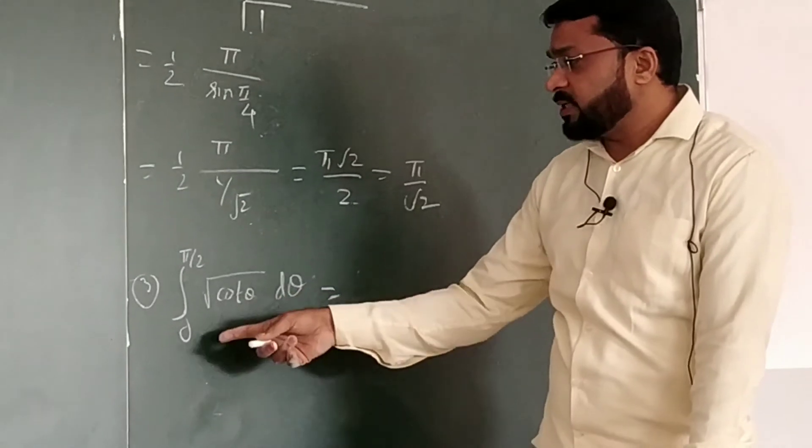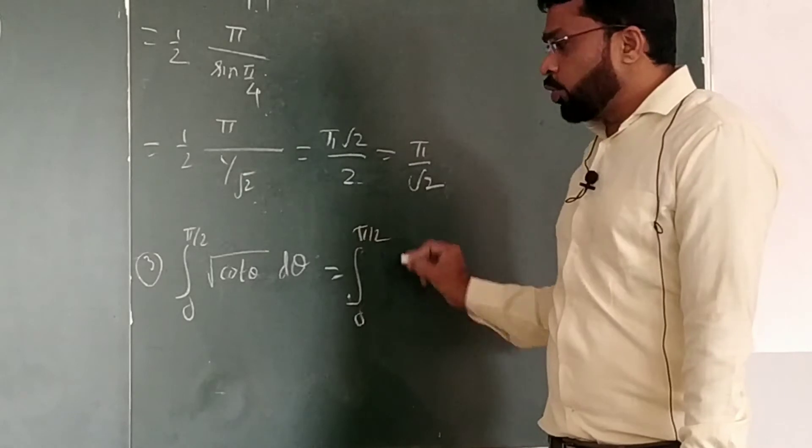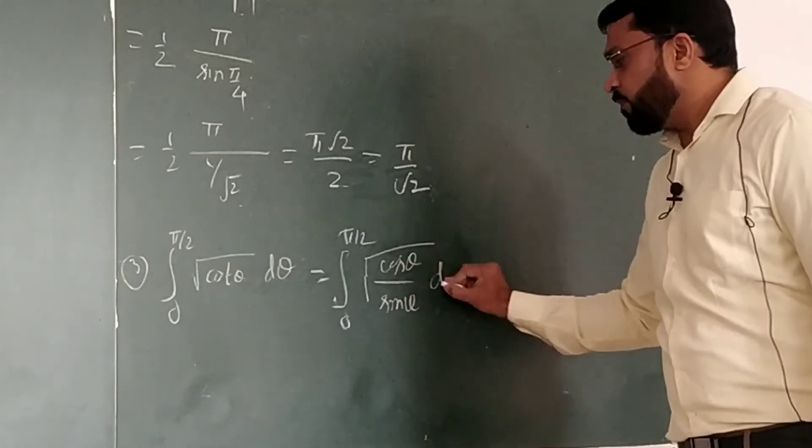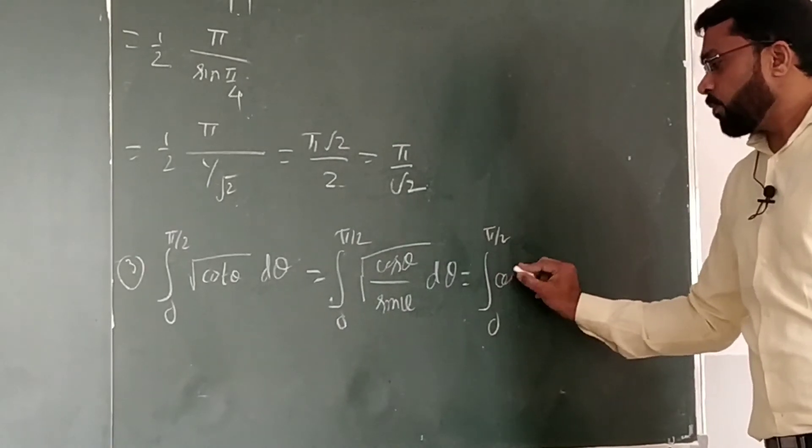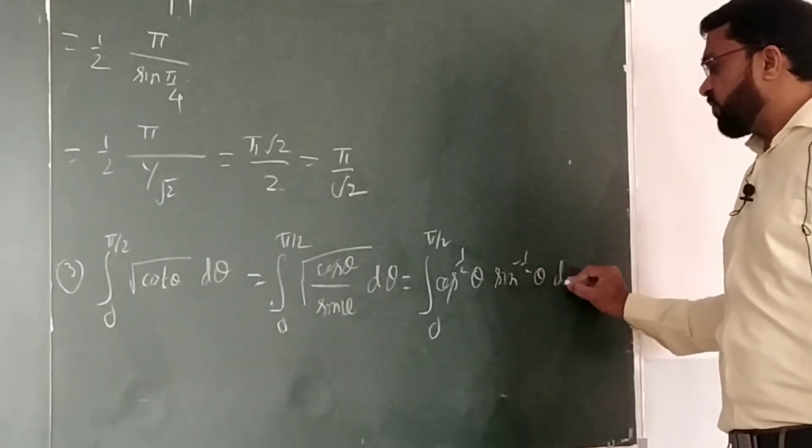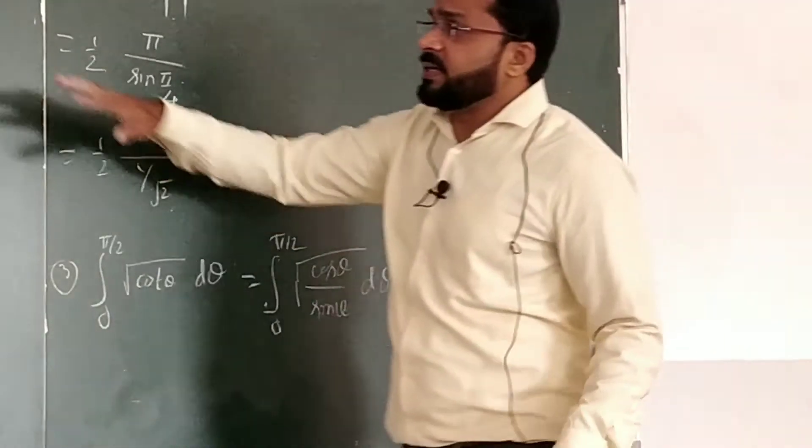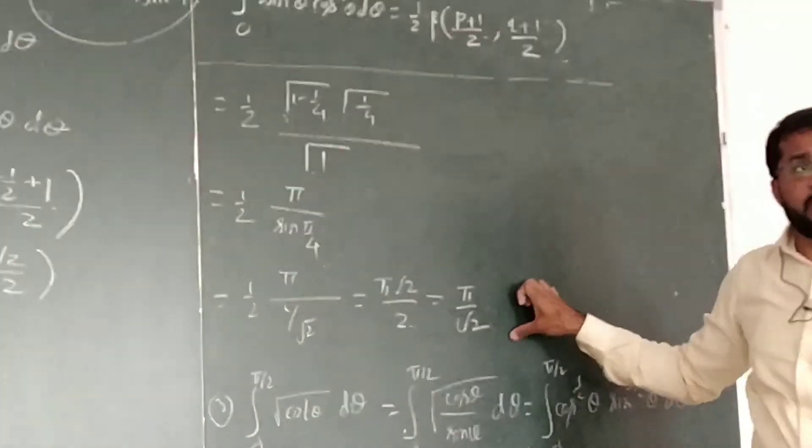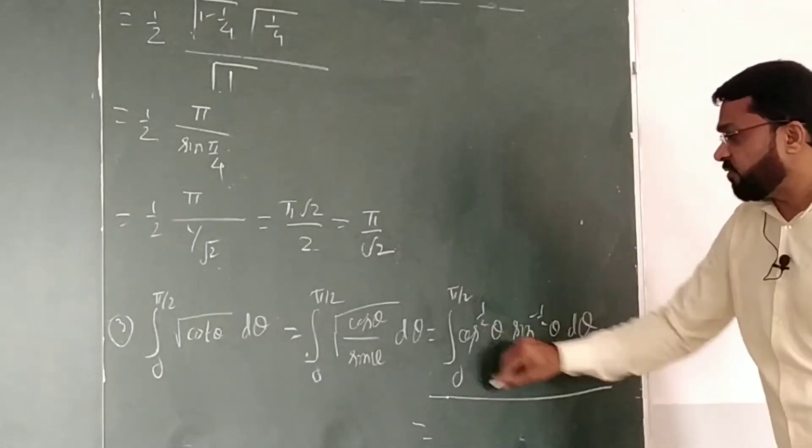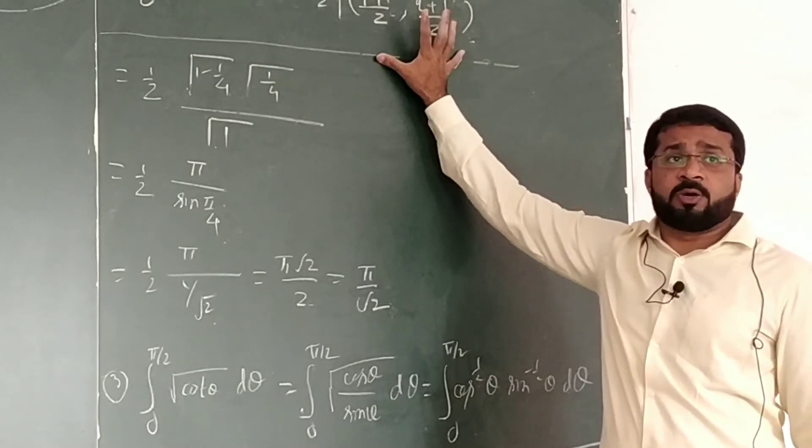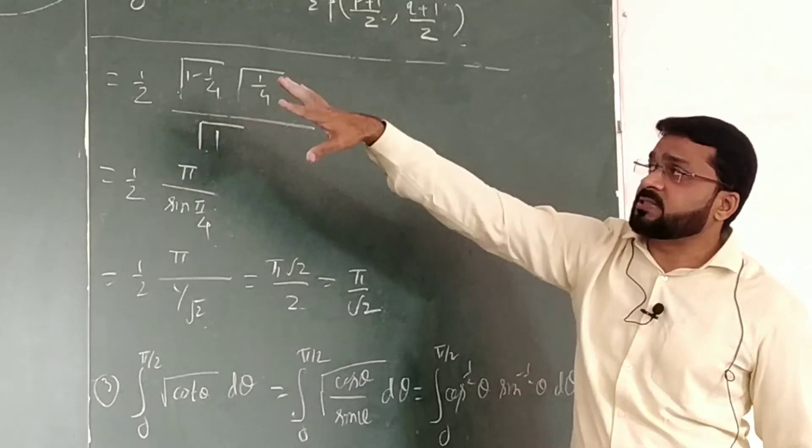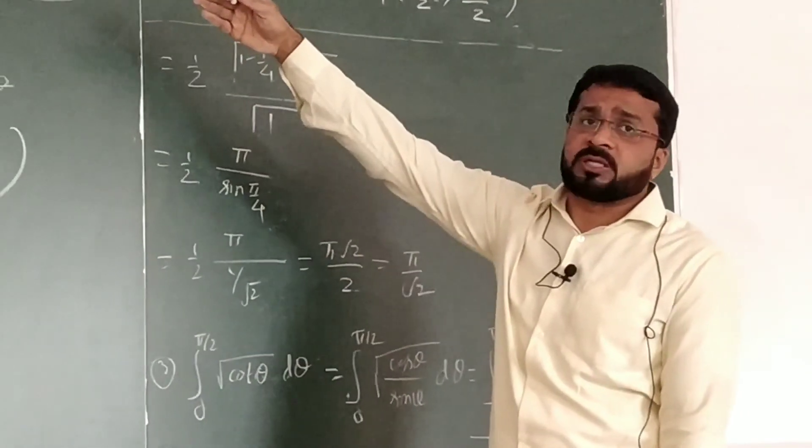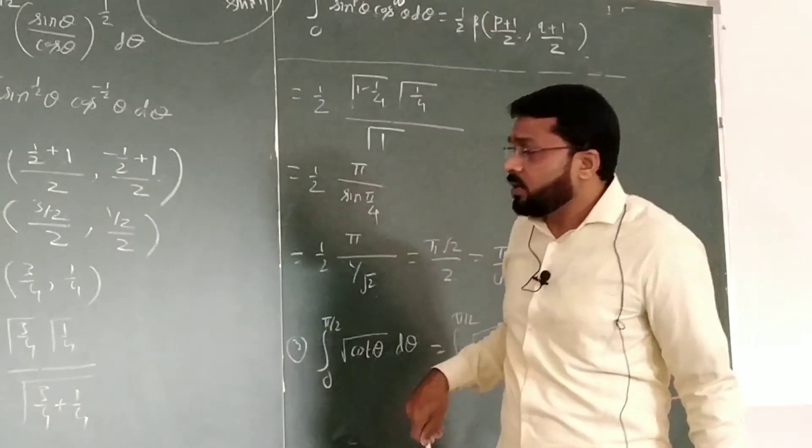Now, same way, we can solve the example of this one, that is 0 to π/2, root of cot θ dθ. How to solve? 0 to π/2, root of cot θ, cot we write as cos by sin, so this will be written as 0 to π/2, cos to the power half θ, sin to the power minus half θ dθ. If you see, this integral and that integral, nearly the same, just power of sin and cos are changed. And formula is symmetric in nature, so your answer should be the same, that is π by root 2, because the beta function will be same, and beta has symmetric property, so we can interchange also. Your answer will be same as that of the root of tan θ. So in the examination, anything can be asked, this example or that example.